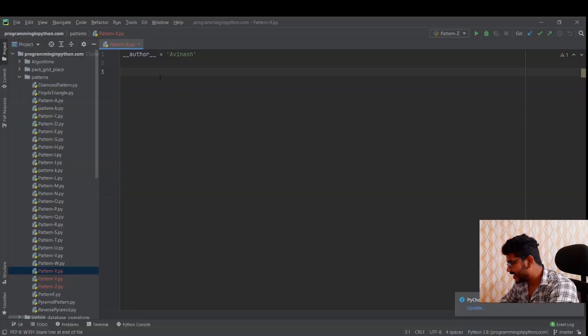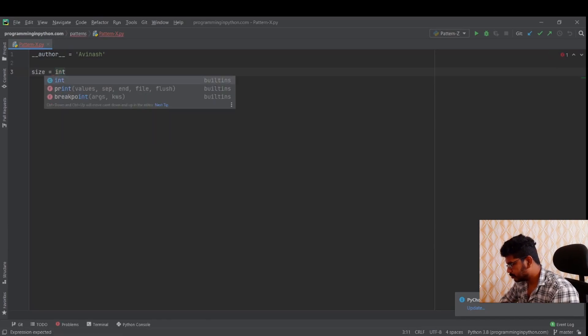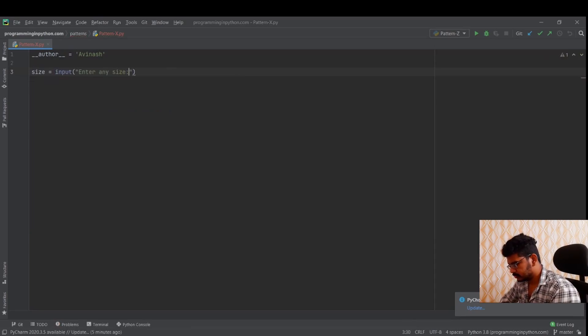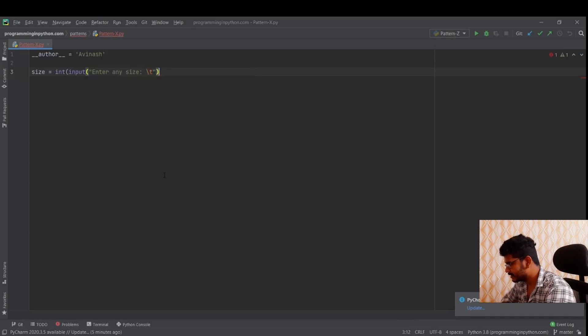Two simple conditions. One is R equal to equal to C for printing this slanting line. Another one is R plus C equal to S minus 1 for printing this slanting line. So that's about the explanation. Now I go into my PyCharm IDE, code the same program, and see the output. I'm in my PyCharm IDE guys. As usual, I'll ask the user to enter the size. Size equal to int, input, enter any size. I also need to cast this to integer so that we can only take integer numbers.